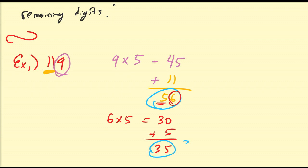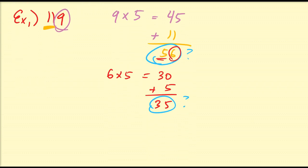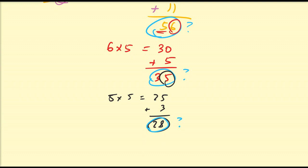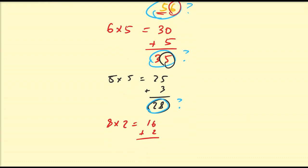So is 35 divisible by 7? Let's assume you do not know. I'm going to take the last digit, which is 5, multiply it by 5 — that's 25 — and add to it its remaining digit, which is 3. So now we get 28. Is 28 divisible by 7? We can continue: 8 times 5 is 40, and 40 plus 2 is 42. Is 42 divisible by 7?